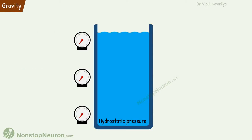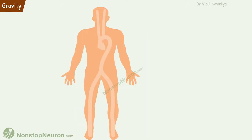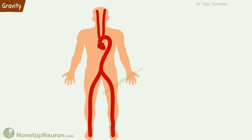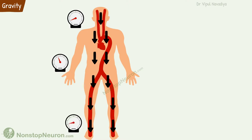First, gravity. We know about hydrostatic pressure. Gravity pulls water downwards, which generates pressure on the water that is deep, and the pressure increases as we go deeper and deeper. A similar thing is seen in our body too. Blood in our blood vessels makes a continuous column of fluid, so gravitational pull on the blood generates pressure on blood at the lower parts of the body. Pressure increases as we go lower in the body.